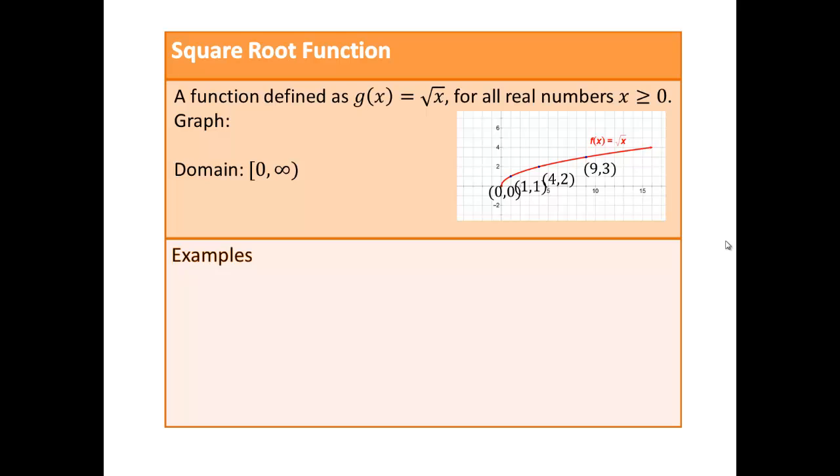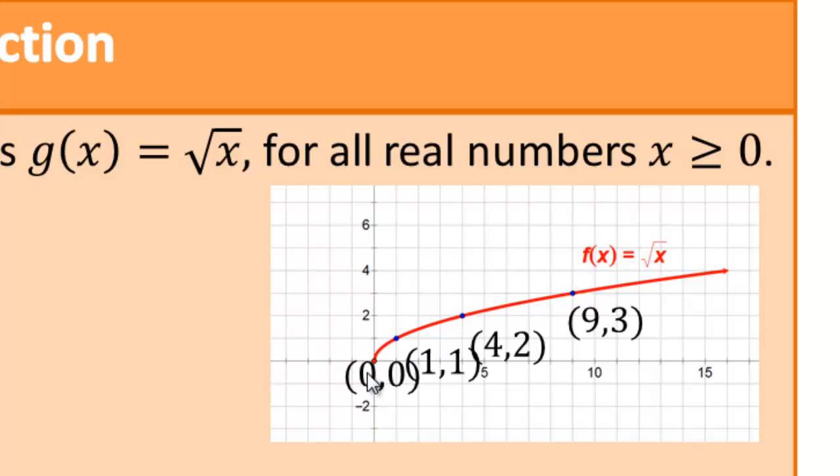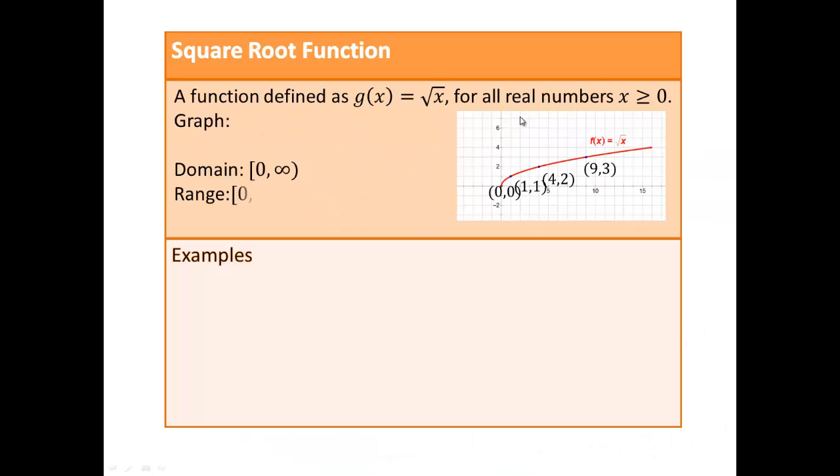All right, so what do you think? Domain is going to be 0 to infinity because any negative number will produce an undefined output. So 0 is the lowest your x value can be and then you can put any positive number you want and take square root of it. What about the range from the graph? Well, we can't have any negative output because square root of 0 is 0 and that's the lowest you're going to be. So again, 0 to infinity will be your range.